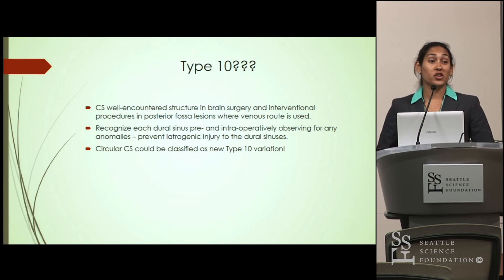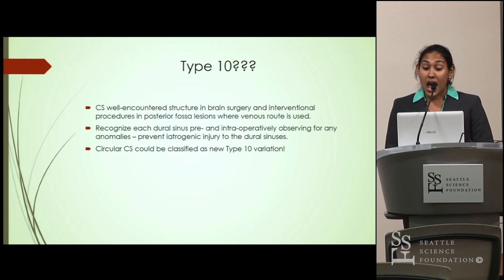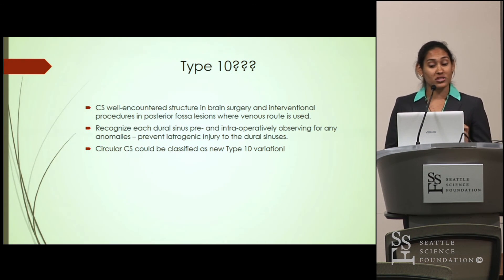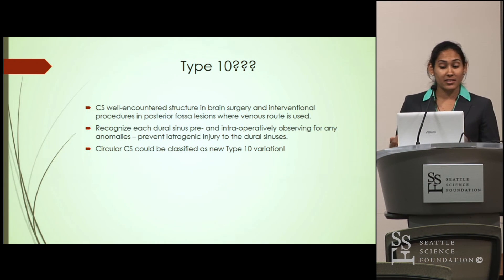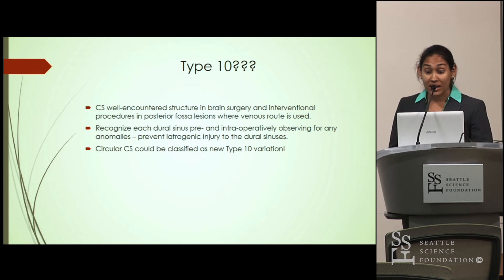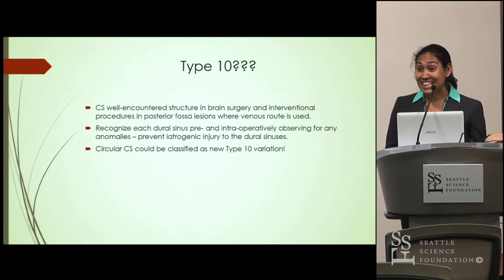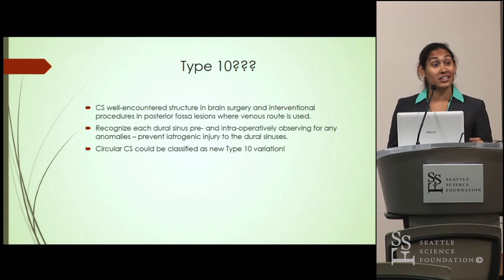The confluence of sinuses is a very well-encountered structure in brain surgery and interventional procedures where the venous route is used. It is of utmost importance to recognize each dural sinus pre- and intraoperatively, to detect any anomalies, prevent iatrogenic injury to these dural sinuses, and identify if a patient may be at increased risk for cerebral edema. As this circular confluence of sinuses has never been seen before, it could potentially be classified as type 10 in the literature. Thank you.